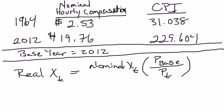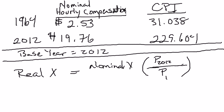What we want is to express the real value of wages in prices you're familiar with. You were all alive in 2012, you bought goods and services, and you have some sense of how expensive things were in 2012 and what a real wage of $19.76 actually bought. So I'm going to convert nominal wages from 1964 into real wages using 2012 as the base year — meaning we multiply by the price level in 2012 divided by the price level in 1964. This gives us the real wage in 1964.